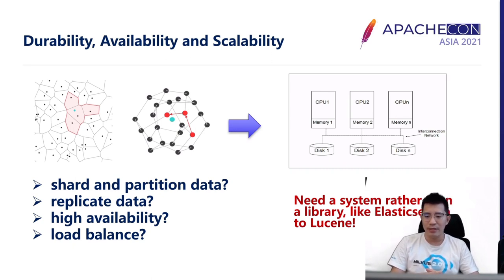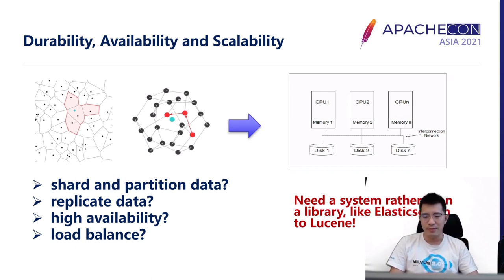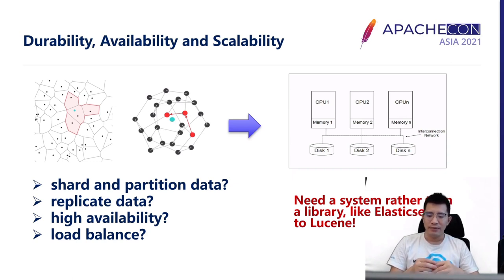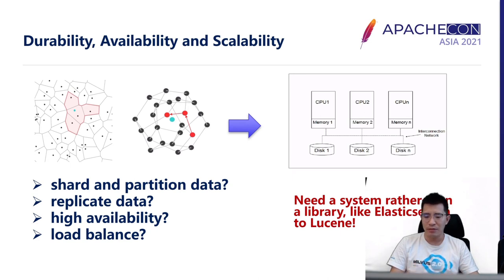Also, durability and availability are big issues when using those libraries directly — users have to handle persistence logic themselves. Generally speaking, FAISS versus Milvus is similar to Lucene versus Elasticsearch. Milvus is designed to make embedding search easier and more scalable.